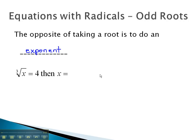In other words, if we have the cube root of x equals 4, we need to do the opposite of a cube root to remove the radical. The opposite of a cube root would be a 3rd power on both sides. 4 to the 3rd is 64, so x, our variable, would be 64.